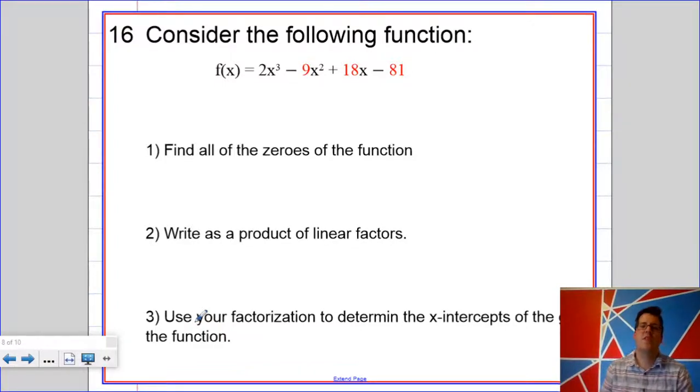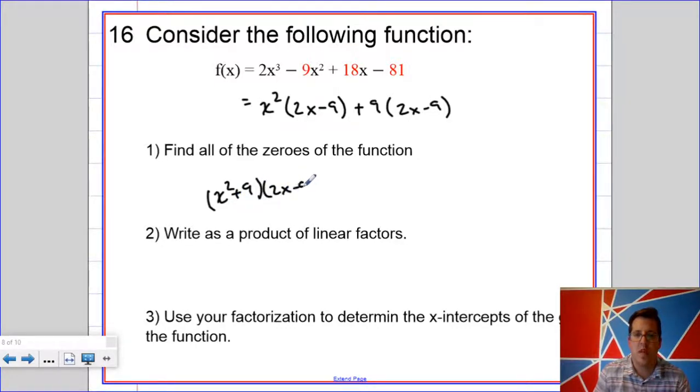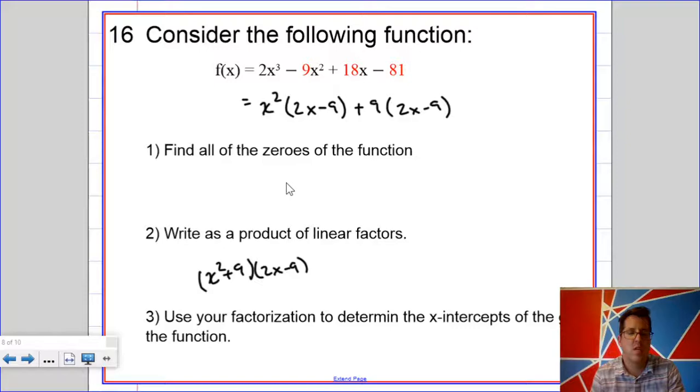Next up, problem number 16. So I see four terms, and before I even can read the question, I just start factoring by grouping. Maybe that's not the best strategy. Maybe I'm doing some reckless math, but you know. So when I factor, I'm going to get 2x minus 9. And here, I can factor out a plus 9, and I'm going to get 2x minus 9. So x squared plus 9 times 2x minus 9. That's more of a factorization, so I might as well move that down here. The zeros would be plus or minus 3i and x equals 9 halves.